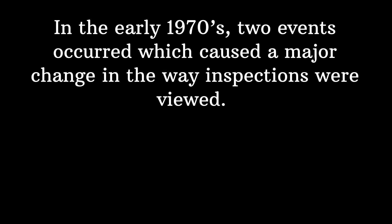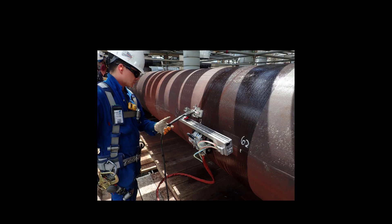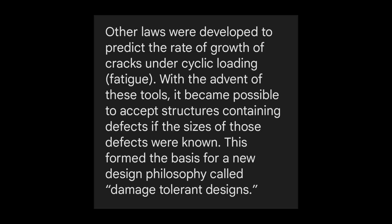In the early 1970s, two events occurred which caused a major change in the way inspections were viewed. The continued improvement of inspection technology — in particular the ability to detect smaller and smaller flaws — led to more and more parts being rejected, even though the probability of part failure had not changed. At this time the discipline of fracture mechanics emerged, which enabled one to predict whether a crack of a given size would fail under a particular load if the material properties or fracture toughness were known. Other laws were developed to predict the rate of growth of cracks under cyclic loading, or fatigue.